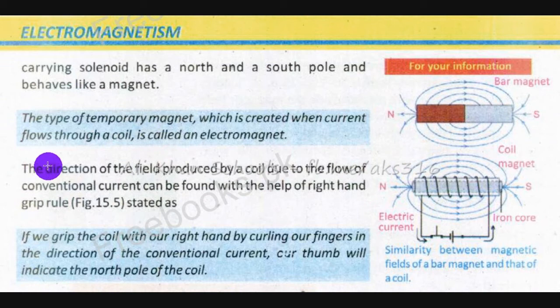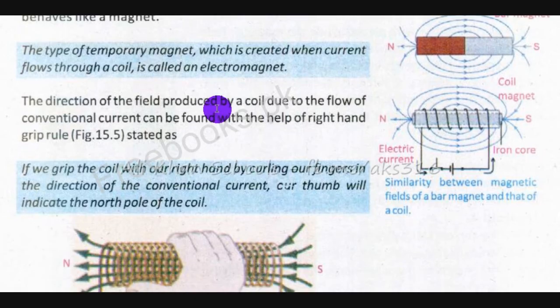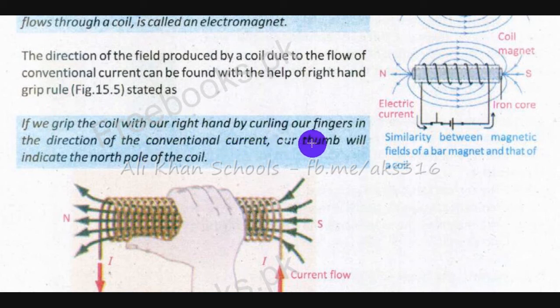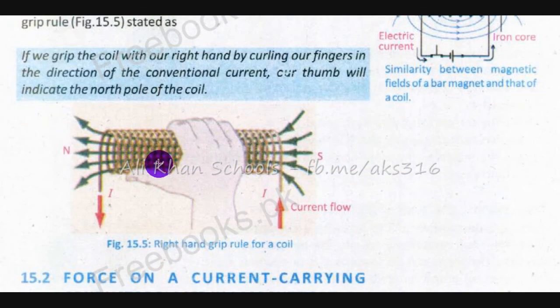The direction of the field produced by a coil due to the flow of conventional current can be found with the help of the right hand grip rule. Woh kehta hai ke is mein jo field ki direction hai woh humein right hand grip rule se hi pata lag jaayegi. Solenoid mein: if we grip the coil with our right hand by curling our fingers in the direction of conventional current, our thumb will indicate the north pole of the coil.